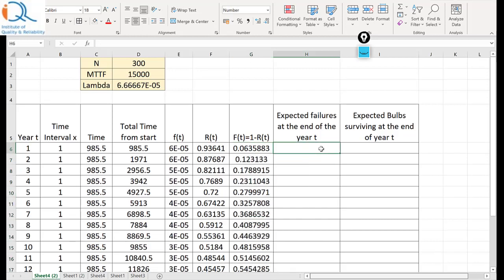The expected failures at the end of year t will be equal to for the first year I can calculate this into 300. But what survived at the end of first year would be 300 minus this number.